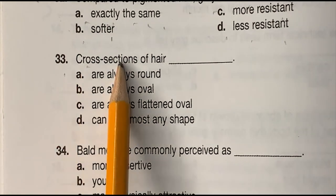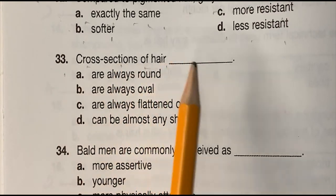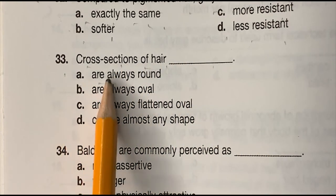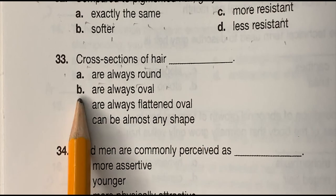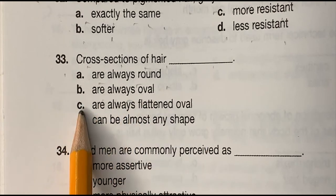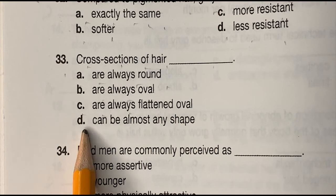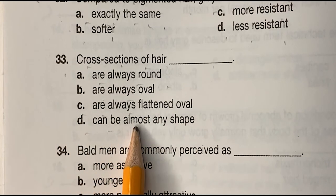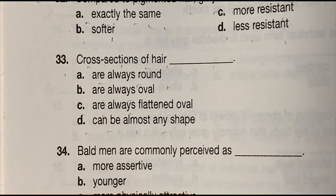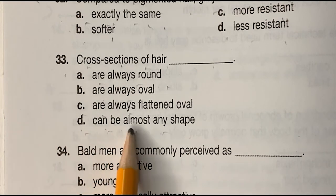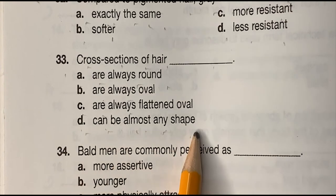Number 33: cross sections of the hair blank — (a) are always round, (b) are always oval, (c) are always flattened oval, or (d) can be almost any shape. The correct answer is (d) can be almost any shape.